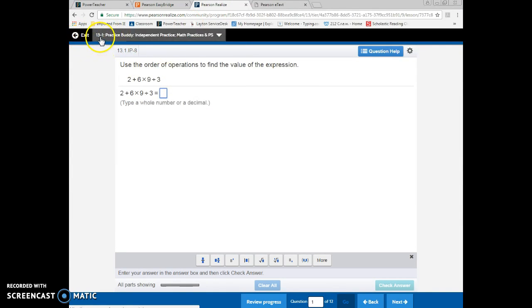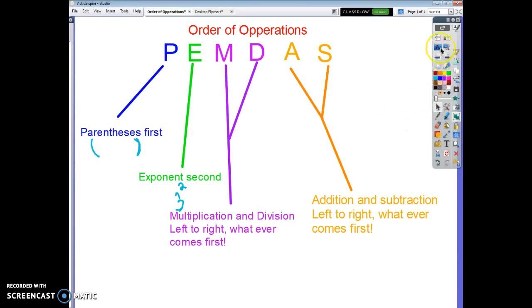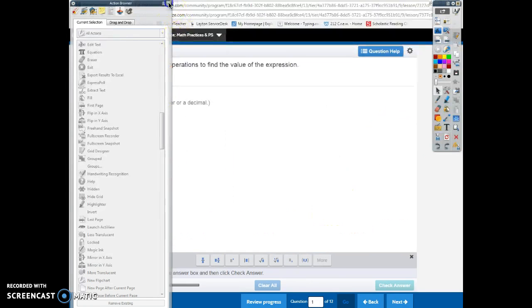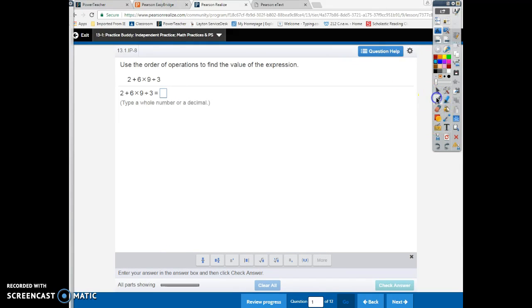So this is going to be practice buddy. This is going to be problem number one, and we are going to work this one together. So let me get my writing stuff ready to go. And here we go. So in your notebook, the first thing you are going to do is copy down the problem. So in my notebook, I write problem number one, I put a circle on it, and I copy this whole thing in my notes. Two plus six times nine divided by three.